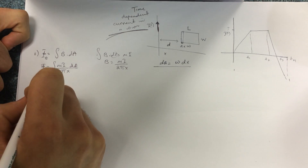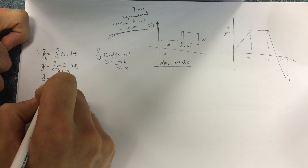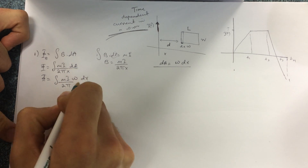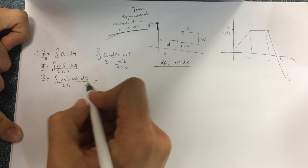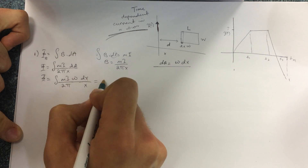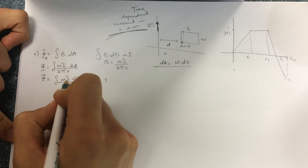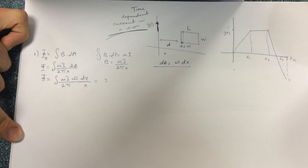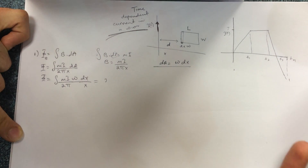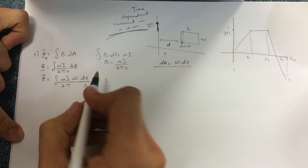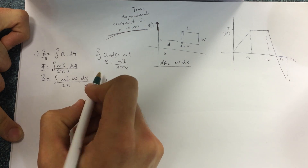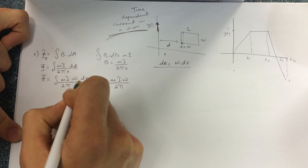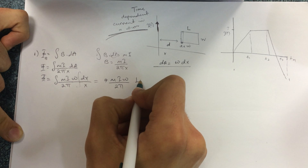From here, the flux equals the integral of (μI / 2π) · (dx / x). Now let's integrate — μ, I, and W are all constants. The current is constant because they asked for a specific time, so the flux has a fixed value at that time. When you integrate dx/x, you get ln(x).